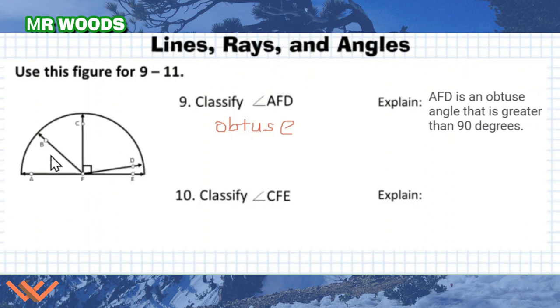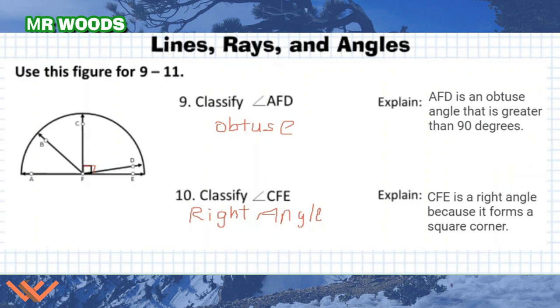At least number 10, classify angle CFE. I have CFE. One thing to note is that we have this symbol right here that shows that that is a right angle. So we can classify this as a right angle. Can you explain what that is? CFE is a right angle because it forms a square corner. And again, we can see that with that symbol, which is a square.